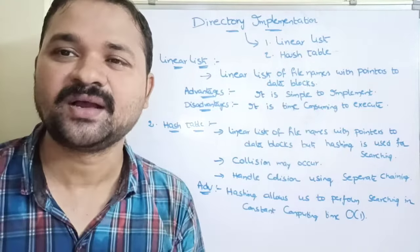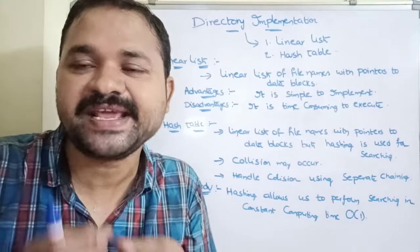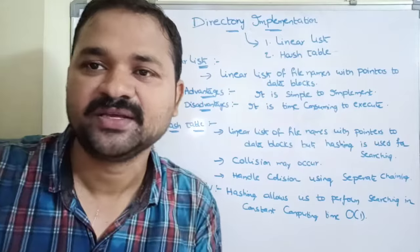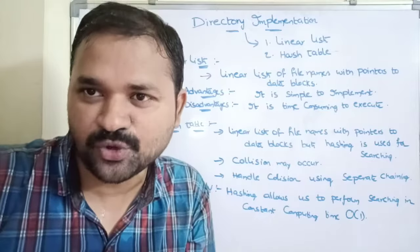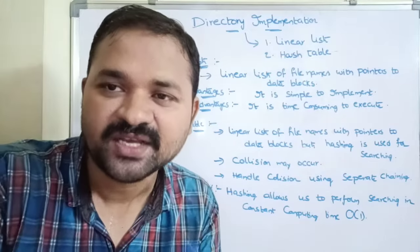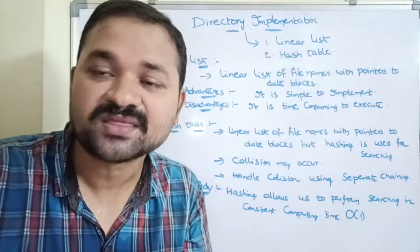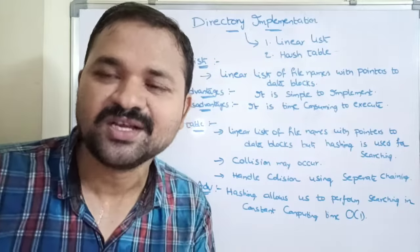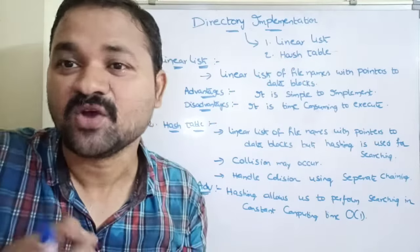Whenever we want to create a file, the operating system first checks whether there is any file with that name. It performs searching in linear fashion one by one. For example, if we have 100 files in the directory, it searches whether the new file name matches the first file, then the second, then the third, and so on through all 100 files. Only if no match is found does it create the new file.